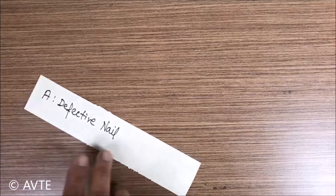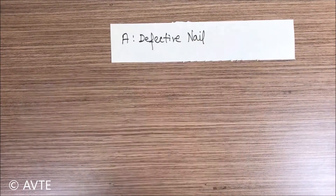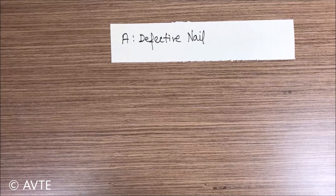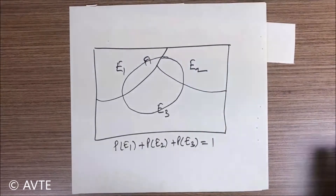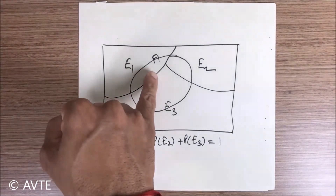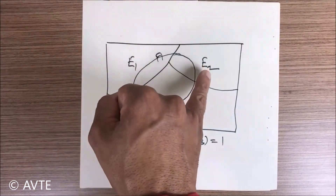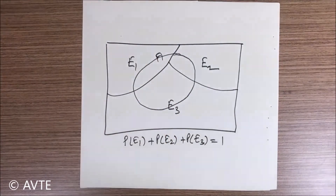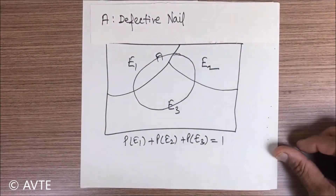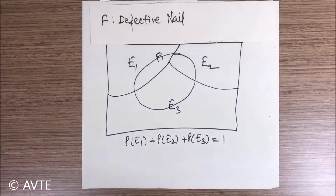Now we can analyze that the concerned event A is a defective nail, and this defective nail is concerned with E1, E2, and E3. Let me explain this using the Venn diagram. In the Venn diagram, A is concerned with E1, A is concerned with E2, and A is also concerned with E3. Here A is the defective nail and E1, E2, E3 are the factories with their productions.